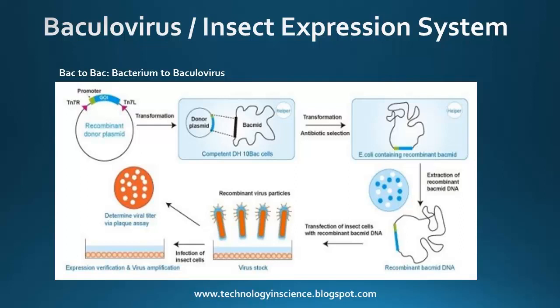The baculovirus insect expression vector system is called Bac-to-Bac, meaning bacterium to baculovirus. In this system, a recombinant donor plasmid has a promoter region flanked by transposon Tn7 on the right and left sides, and the gene of interest is cloned into the p10 or polyhedrin region. Upon transformation into specialized DH10Bac competent cells, selected using antibiotic markers, the donor plasmid transposes into the bacmid plasmid forming a recombinant bacmid. This bacmid is extracted from E. coli and transfected into insect cells to produce multiple rounds of infection and ultimately recombinant protein.